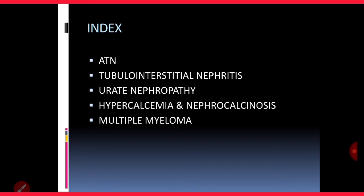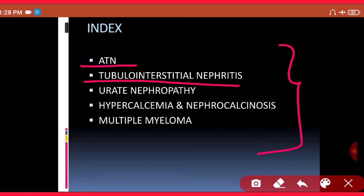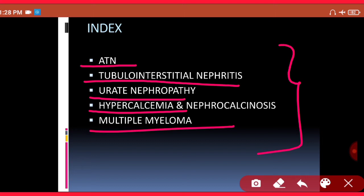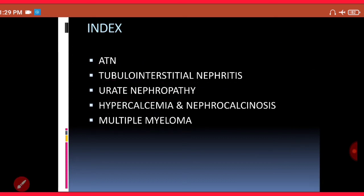Tubular interstitial disease is divided into five portions: the first is acute tubular necrosis, the second is tubular interstitial nephritis, the third is urate nephropathy, the fourth is hypercalcemia-induced nephropathy, and the fifth is multiple myeloma's effect on the kidney. Today we will discuss acute tubular necrosis in detail; the rest will be covered in the next lecture.